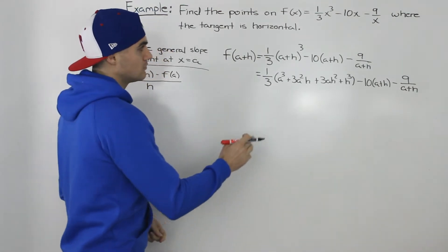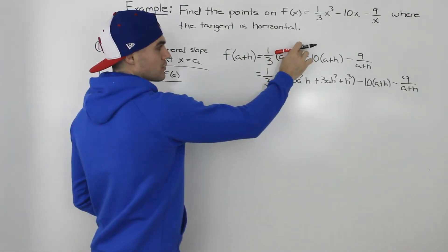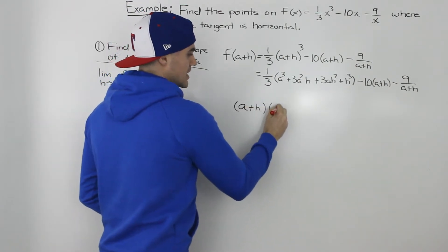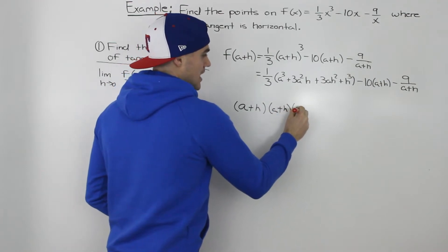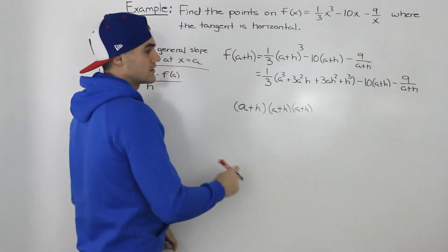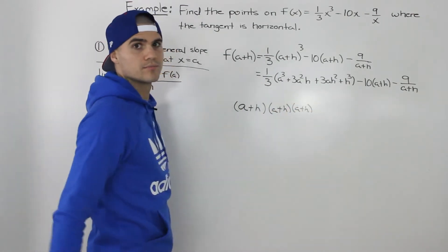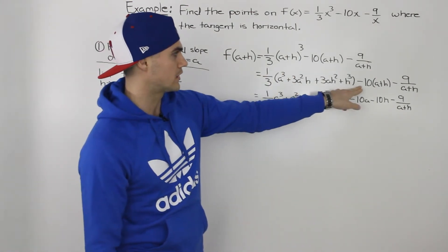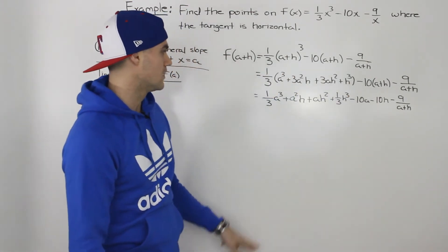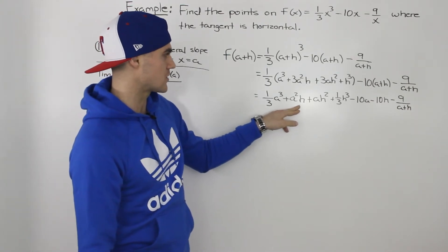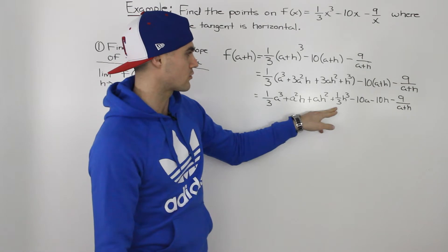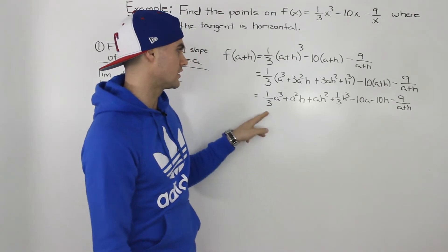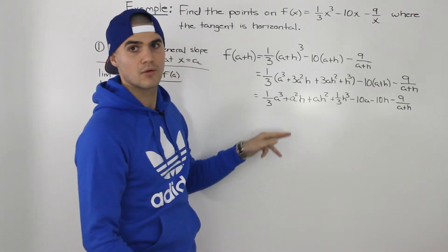You have to be careful — you can't just distribute the power of 3 into the bracket. You have to rewrite it as (a+h)(a+h)(a+h) and foil out all the brackets. Expanding and then distributing the 1/3 and the negative 10, we end up with (1/3)a³ + a²h + ah² + (1/3)h³ minus 10a minus 10h minus 9 over (a+h). There are no like terms to simplify further.